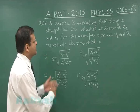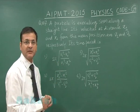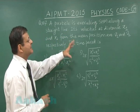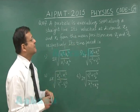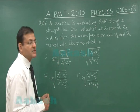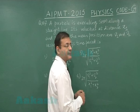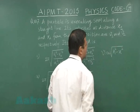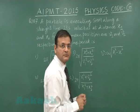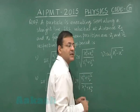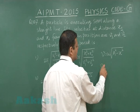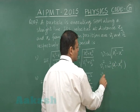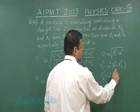Question 107 is based on simple harmonic motion and has been asked several times in previous years. A particle executes SHM along a straight line with velocities v₁ and v₂ at distances x₁ and x₂ from the mean position. The standard relation is v = ω√(A² − x²). Forming two equations: v₁² = ω²(A² − x₁²) and v₂² = ω²(A² − x₂²).